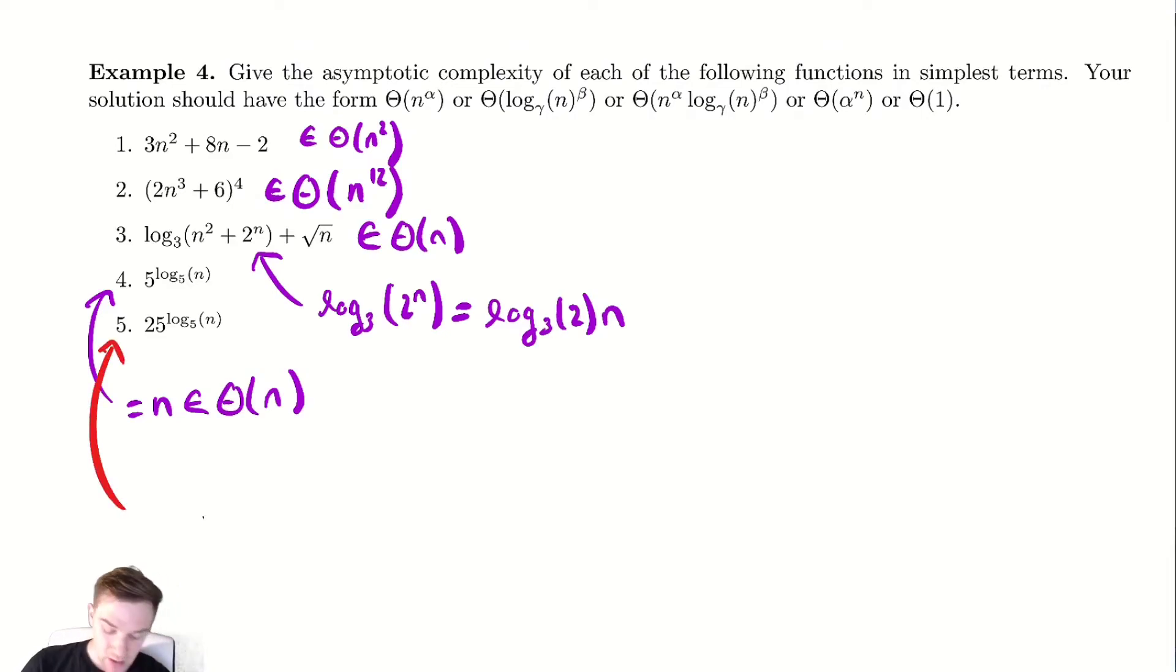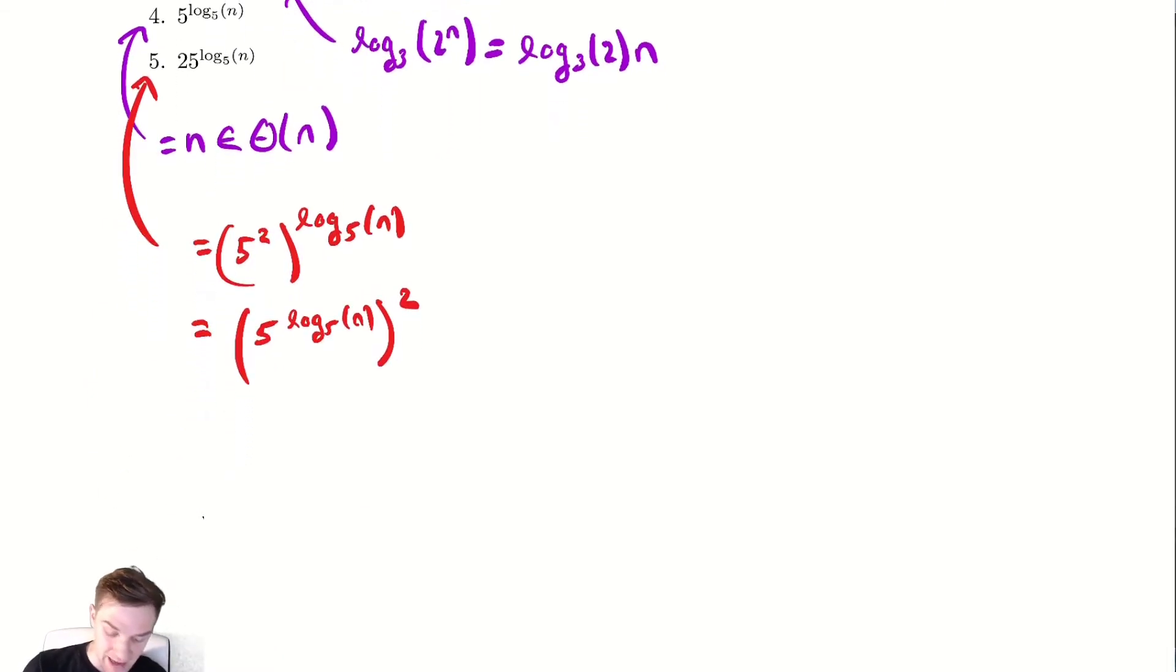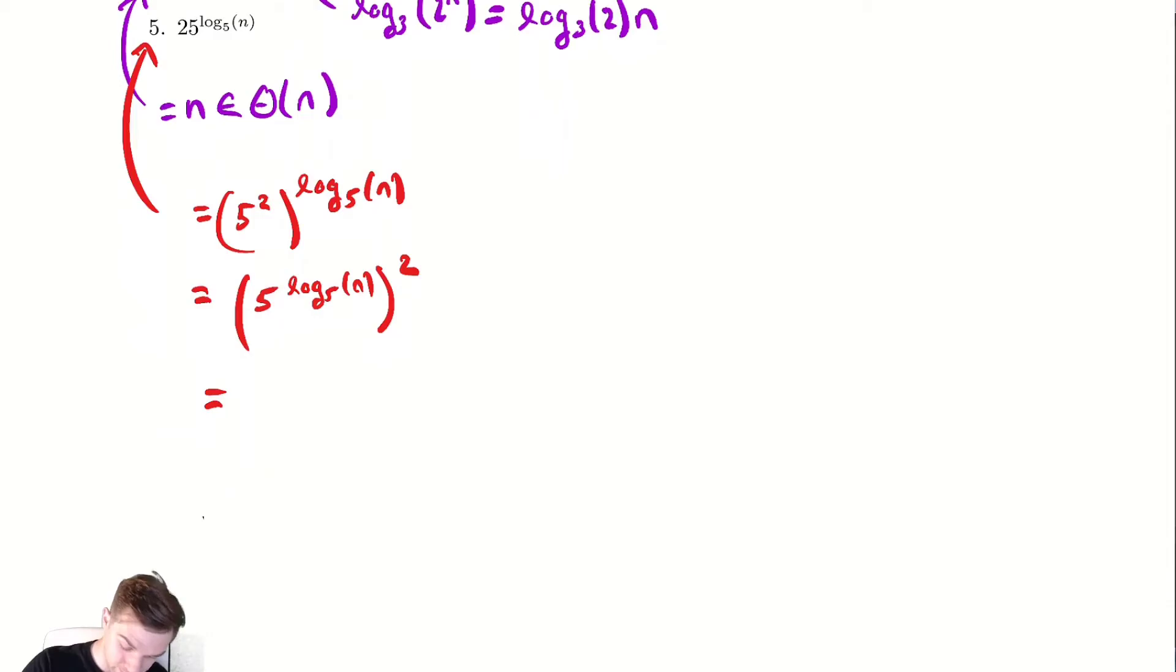For 5, my base of my exponent and my base of my log no longer directly agree. So what I must do is try and get them to agree in some way. So what I'm going to do is rewrite that as 5² to the log base 5 of n, which I can then switch the order of exponentiation. This is one of my exponent rules. Write this as 5 to the log base 5 of n². Switch the order of those exponents. Now 5 to the log base 5, those cancel and I'm left with n². So 5 would be in Θ(n²).